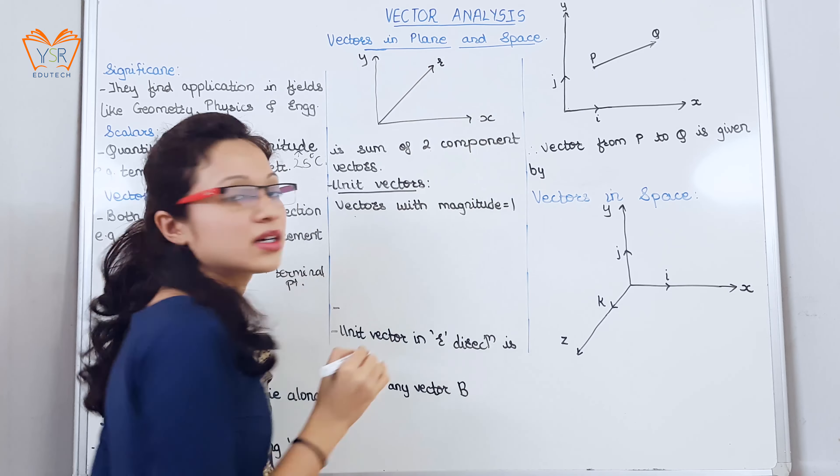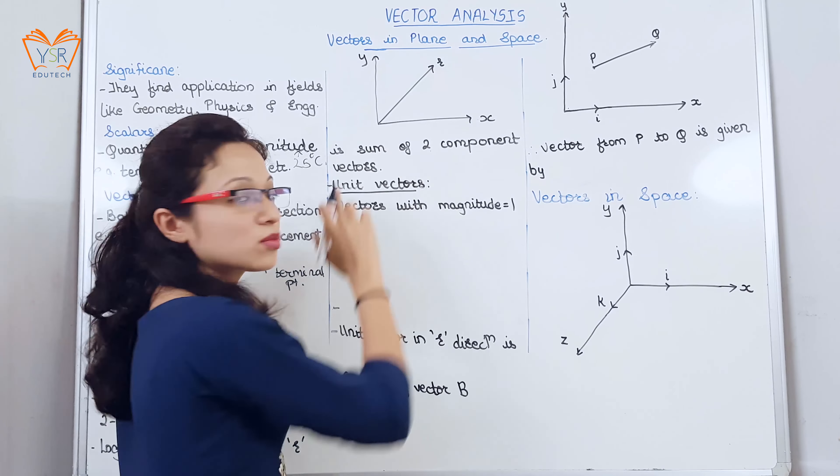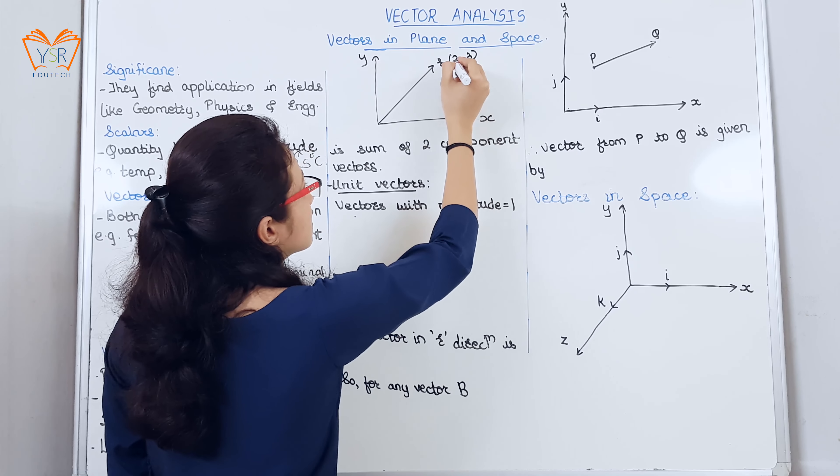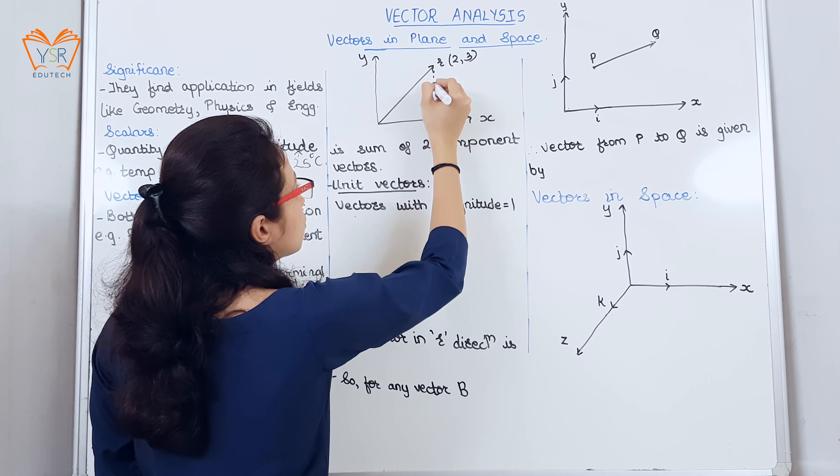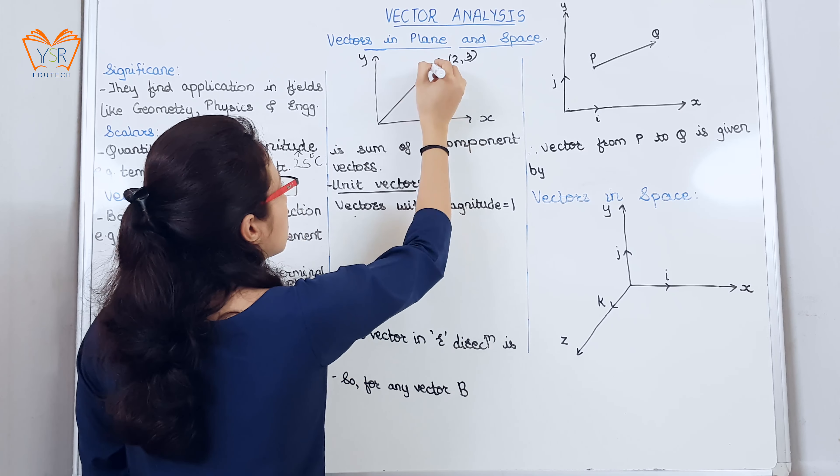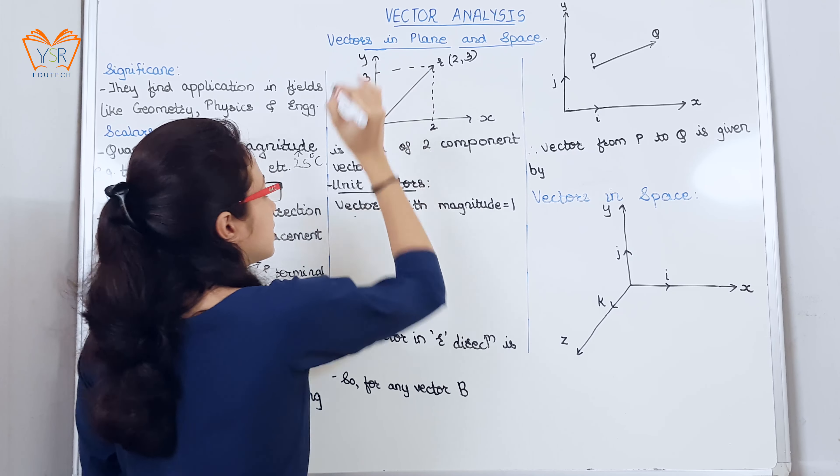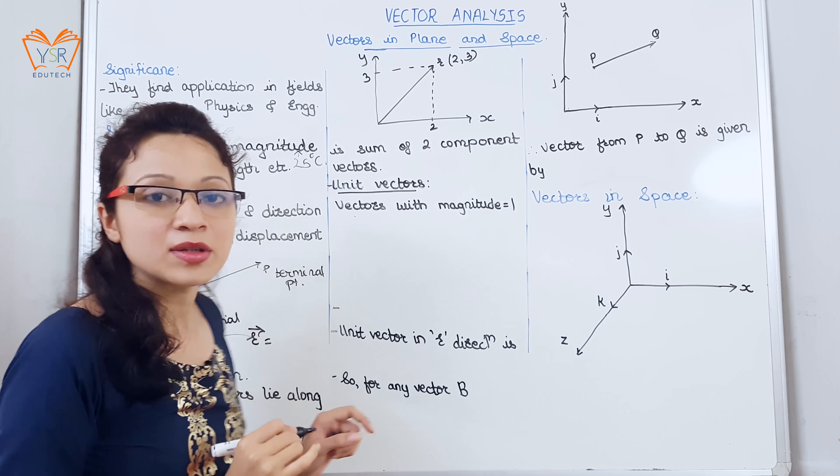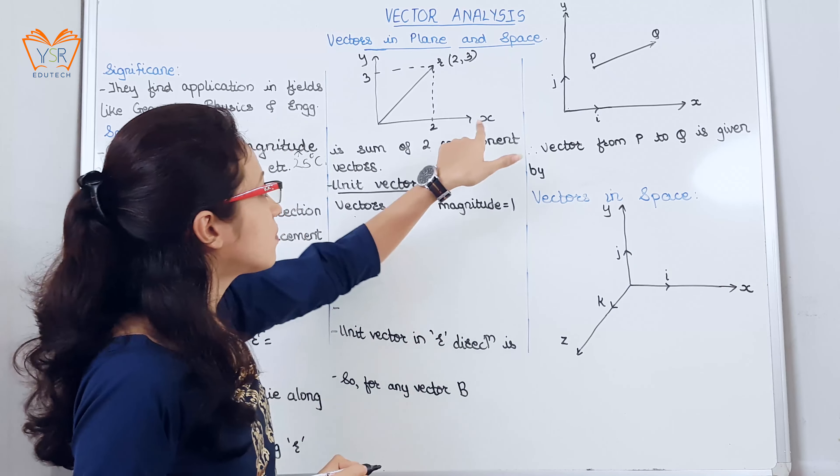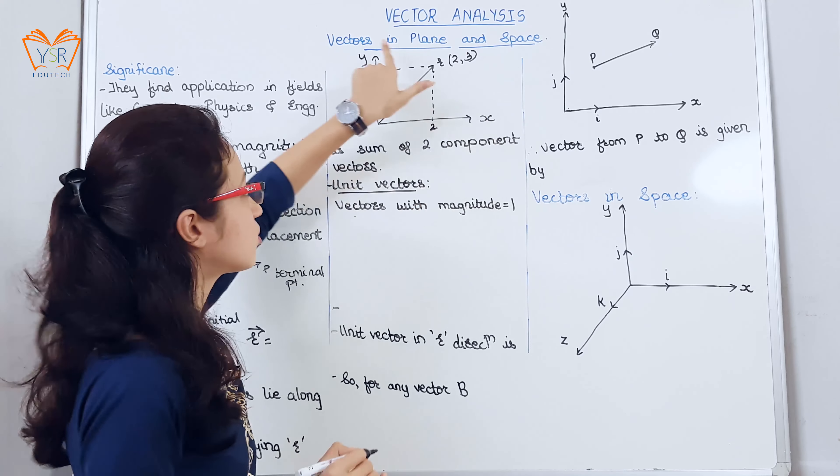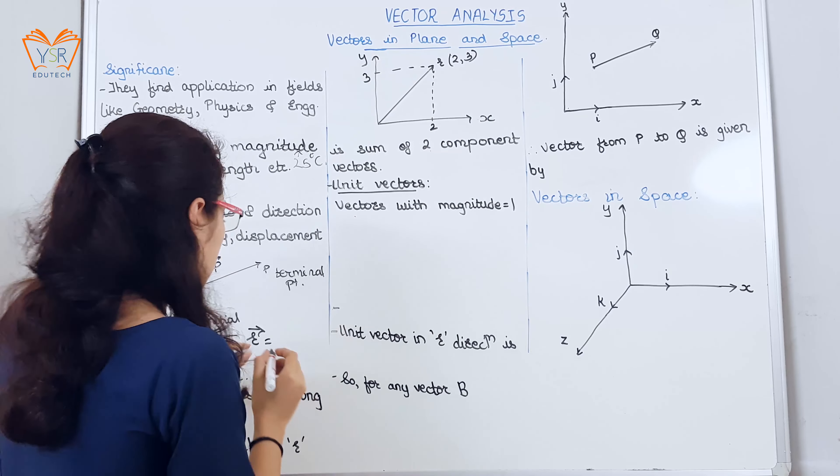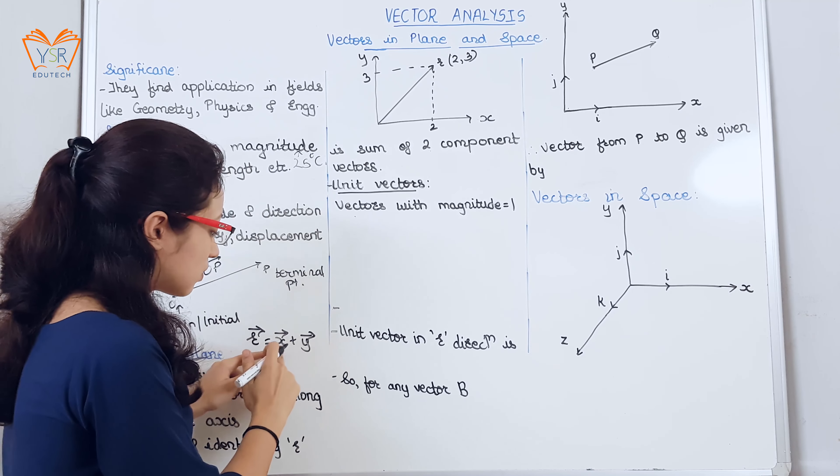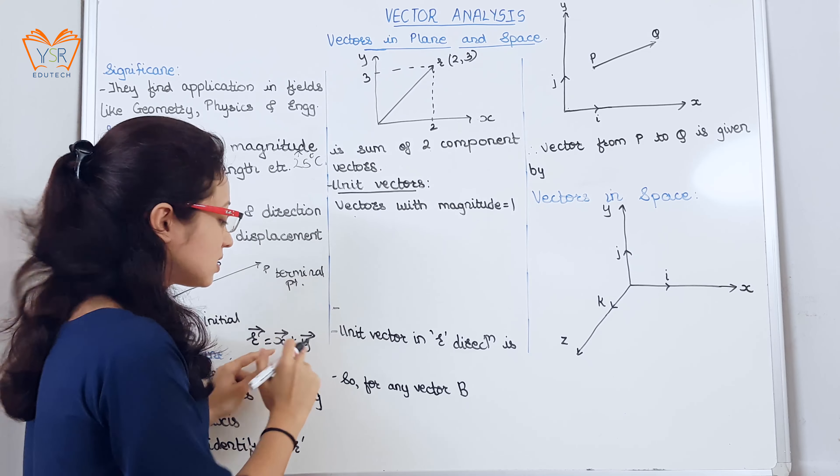Suppose we consider a vector r that starts from the origin and this vector has point coordinates of 2 and 3, on x axis it will be 2, on y axis it will be 3. So the vector r is given by the vector addition of vector lying along the coordinate axis x and coordinate axis y. So r vector is equal to x vector plus y vector.